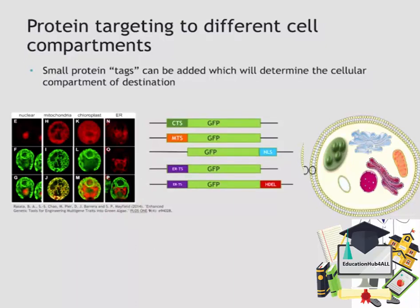We went ahead and demonstrated this using GFP as our protein of interest. We used a chloroplast transit sequence, a mitochondrial transit sequence, a nuclear localization sequence, an ER transit sequence, and an ER transit sequence with an additional HDEL signal. For example, the chloroplast transit sequence targets our protein to the chloroplast, and the mitochondrial transit sequence does that for the mitochondria. The ER signal targets the protein to the ER, and if you add the HDEL sequence, the protein is retained there rather than being secreted. As you can see in the fluorescent pictures, we successfully targeted the fluorescent protein to the nucleus, mitochondria, chloroplast, and ER.